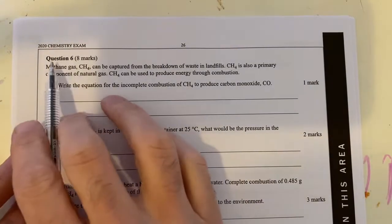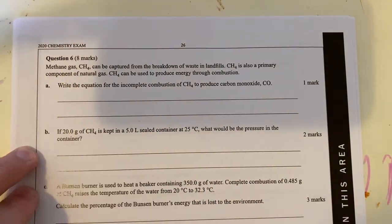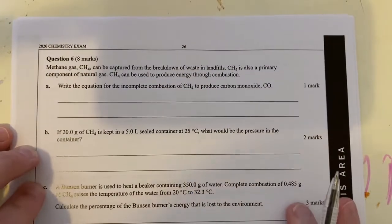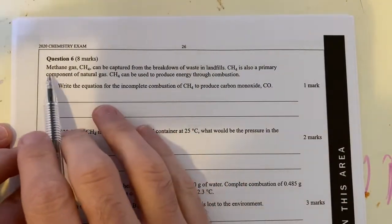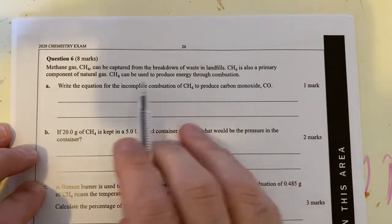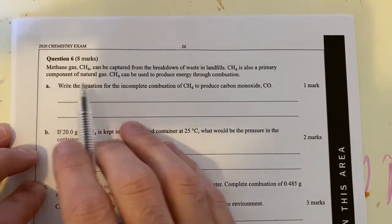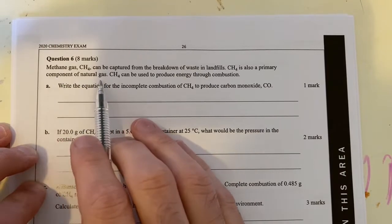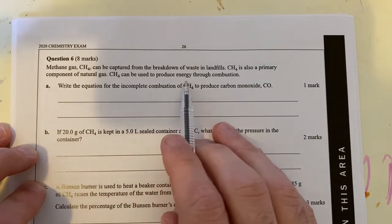So here we are with question 6 from the 2020 Chemistry VCE exam. This one looks to do with fuel. Methane gas, which is CH4, can be produced by the breakdown of waste in landfills. It's also the primary component of natural gas, which can be used to produce energy through combustion.